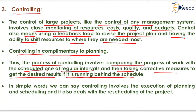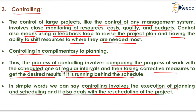In the controlling process, we take care of the progress of work in the project. If any activity is behind schedule, we deploy extra resources for its completion within a particular time interval. If any activity is ahead of schedule, we take resources from it and deploy them to activities that are running behind. In simple words, controlling involves the execution of planning and scheduling and also deals with the rescheduling of the project.